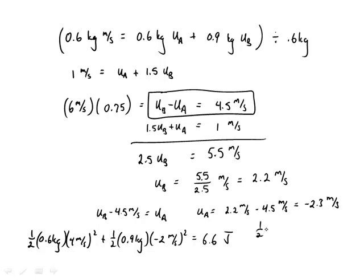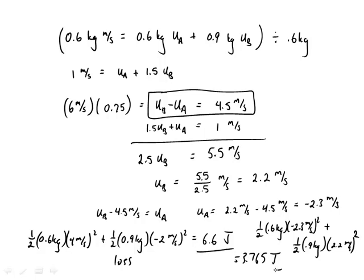And then after the collision, I have one-half 0.6 kilograms negative 2.3 meters per second squared plus one-half 0.9 kilograms 2.2 meters per second squared, which is 3.765 joules. And so I have a loss, okay, so I started with 6.6 joules, now I have 3.765, 2.835 joules.